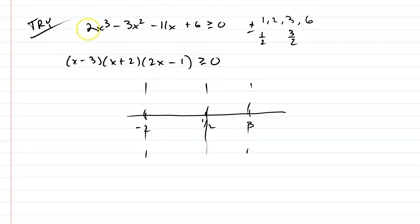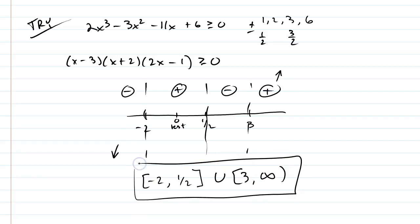Okay. Thinking about the end behavior of this, we know it's going to go up in the right. It's going to go down on the left. Plugging in 0 as a test point would give me 6. So, that's positive. And, I know it's negative over here, positive here, negative here, positive here. Okay. So, when is it greater than or equal to 0? Well, from negative 2 to 1 half inclusive, it's greater than 0. And, at these numbers, it's 0. And, then 3 to infinity with 3 inclusive would be the other side.